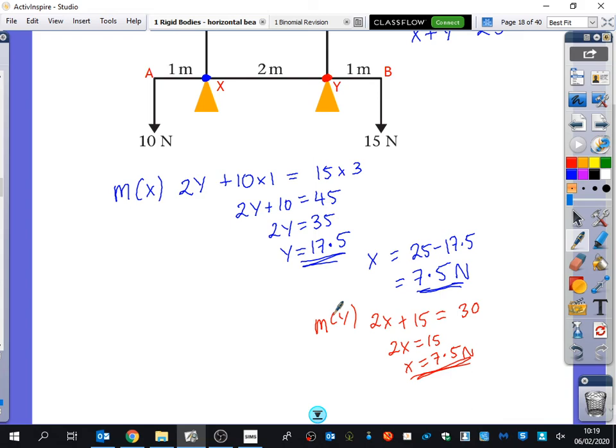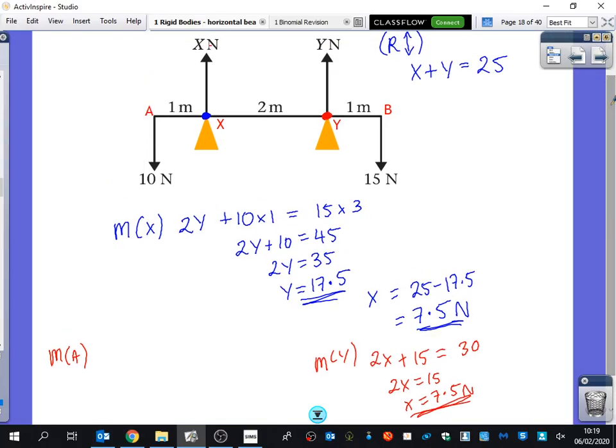So you could have done it by taking moments about Y. I'm just going to show you one more thing that would have worked. If you took moments about A, this one wouldn't be included. You would have 1X plus 3Y is equal to 15 times by 4. So you get X plus 3Y equals 60. Now, I guarantee if you solve this equation and this equation simultaneously, you will get X equals 7.5, Y equals 17.5.